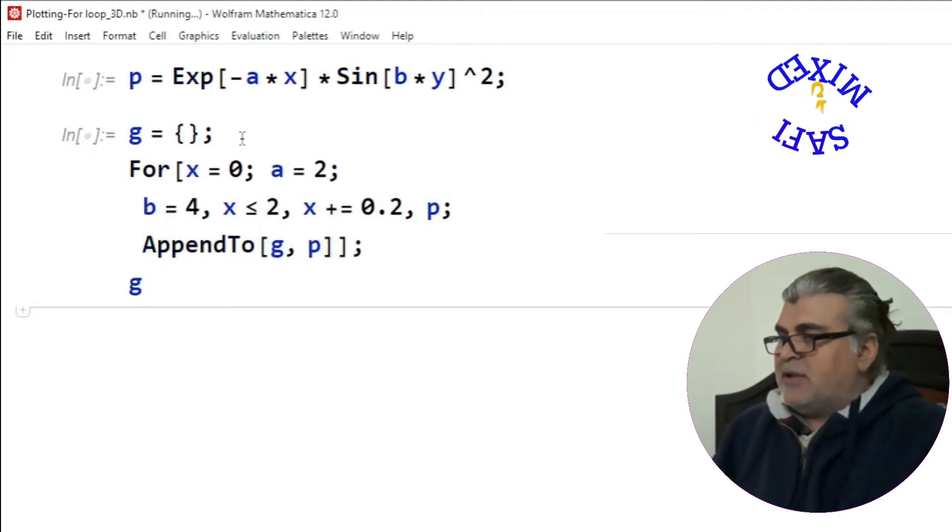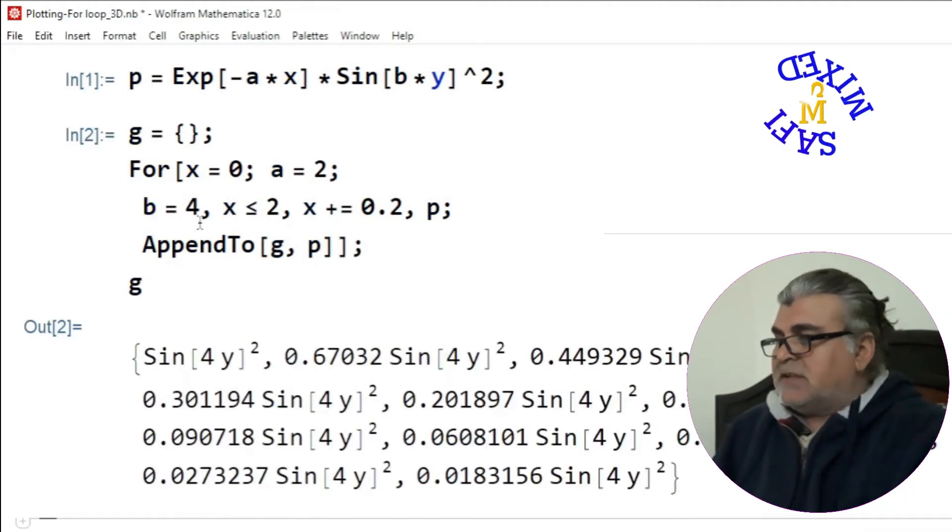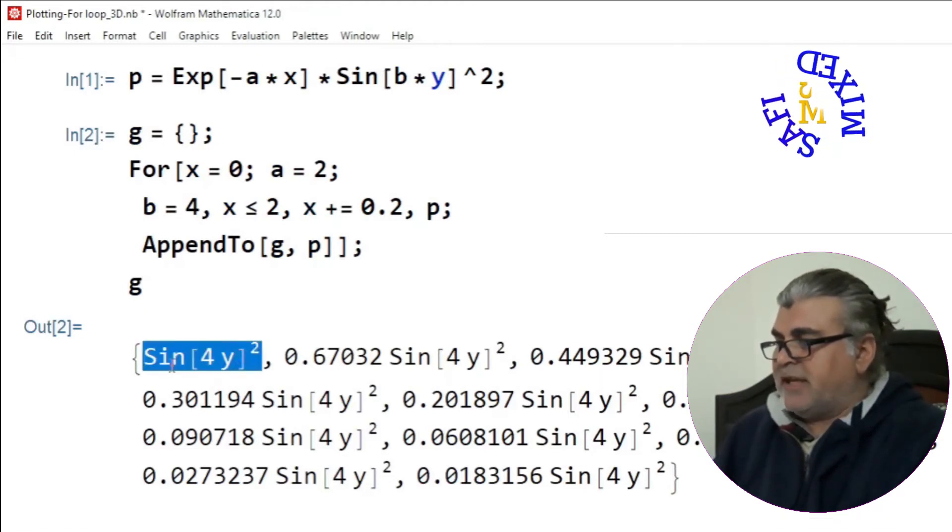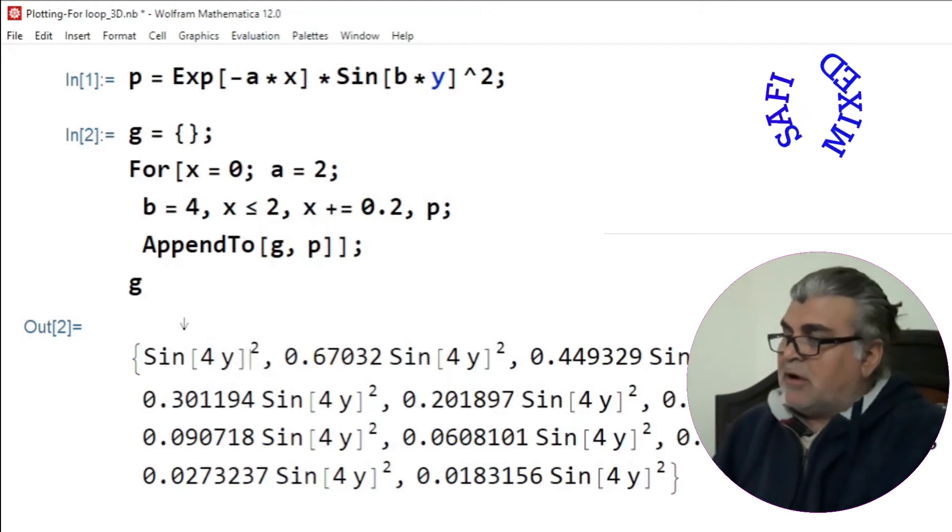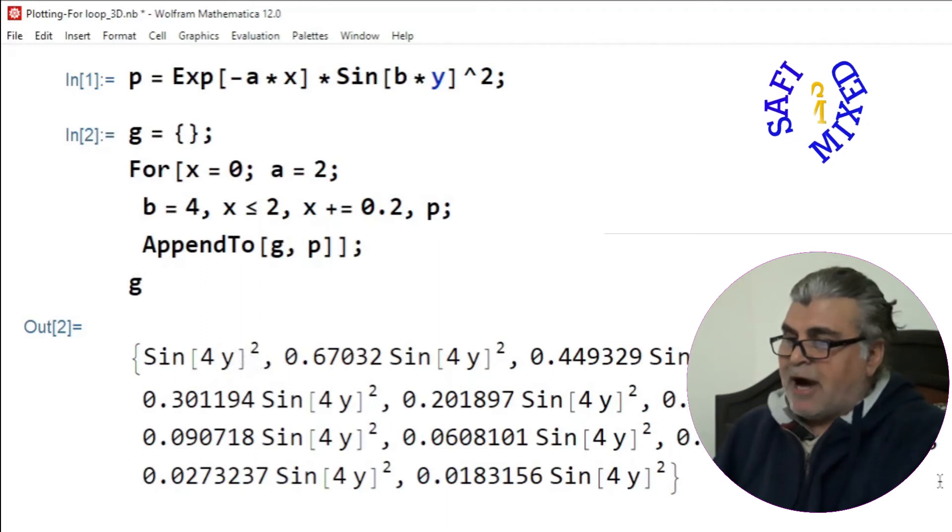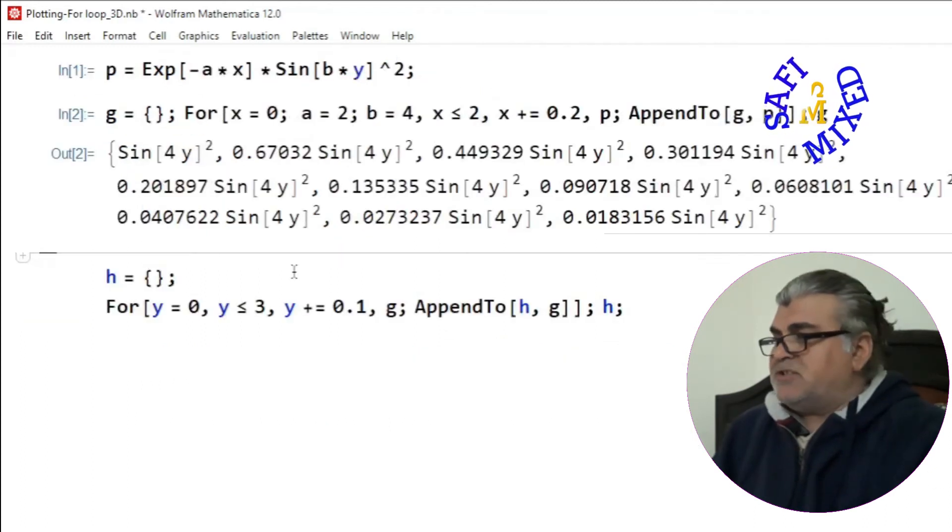So these are the values of the function for different choices of x. We see for x equal to 0 we have this, and so on. And now I want to generate the values of the list g for different choices of y.